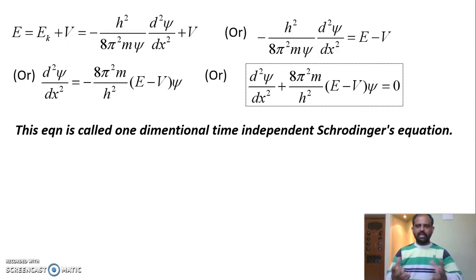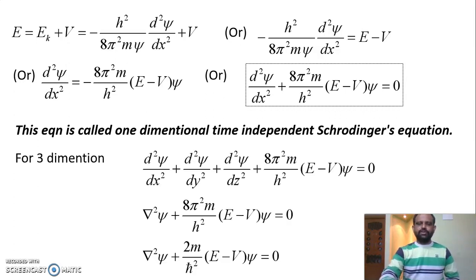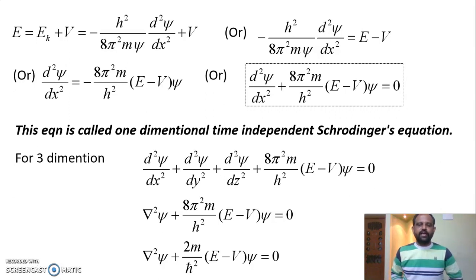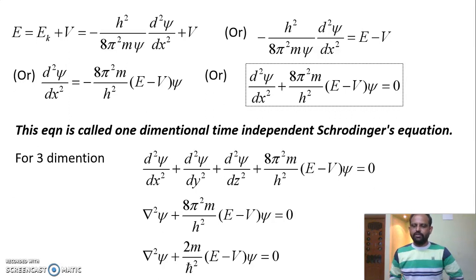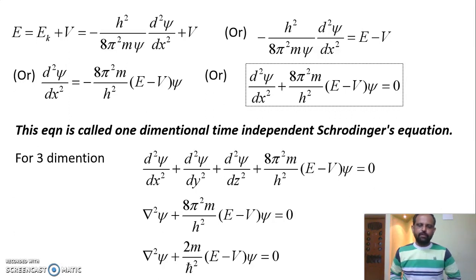If we consider the particle in a space with all three coordinates, we express this equation in three dimensions. For three dimensions, the wave function psi is a function of x, y, and z. We replace d²ψ/dx² with the full Laplacian: ∂²ψ/∂x² + ∂²ψ/∂y² + ∂²ψ/∂z² + (8π²m/h²)(E − V)ψ = 0. In terms of the Laplacian operator del-squared, this becomes ∇²ψ + (8π²m/h²)(E − V)ψ = 0. This is the three-dimensional time-independent Schrödinger equation.